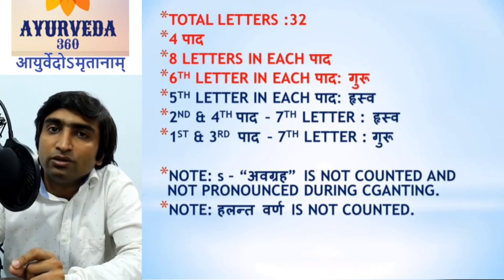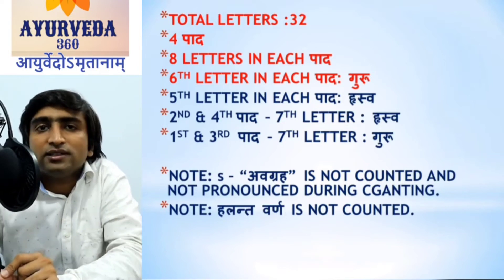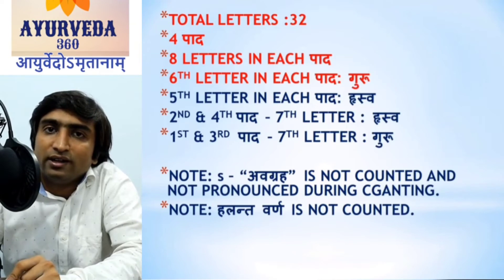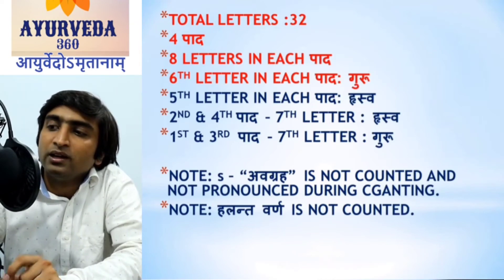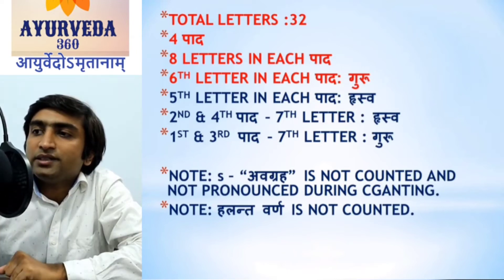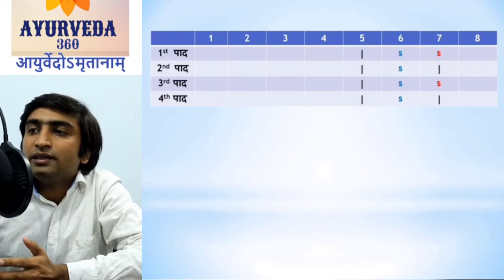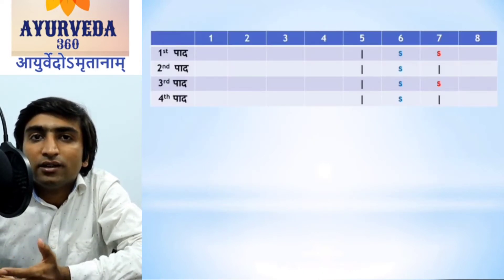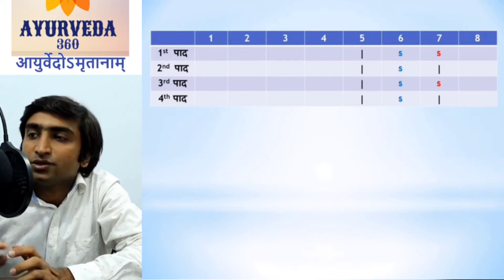One additional note: whenever there is an Avagraha in a Shloka, we don't pronounce it, and neither is it counted in the number of letters — that is very important. And as already mentioned, Alanta Varna will not be counted. After seeing the rules of Anustub Chandas, if you look at the Lakshana Shloka itself, it follows those very rules — meaning this Shloka itself is written in Anustub Chandas.